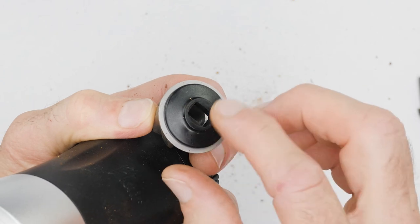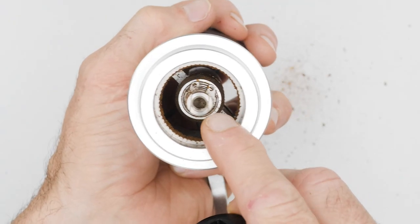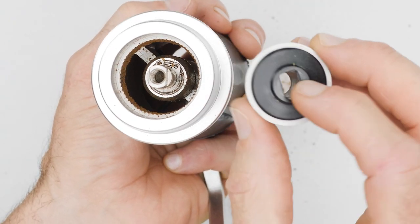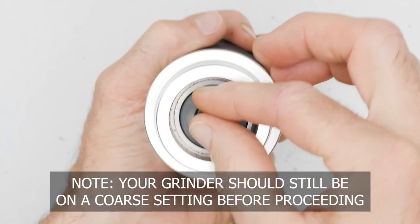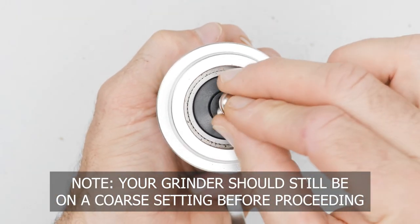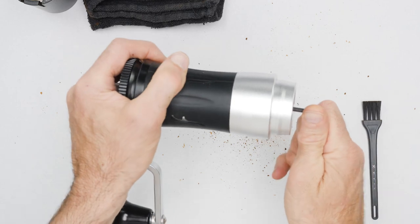Align and insert the prongs into the holes on the bottom of the burr. Align the flats on the axle with the flats on the burr retainer during installation. Tighten the bolt to secure them to the axle.